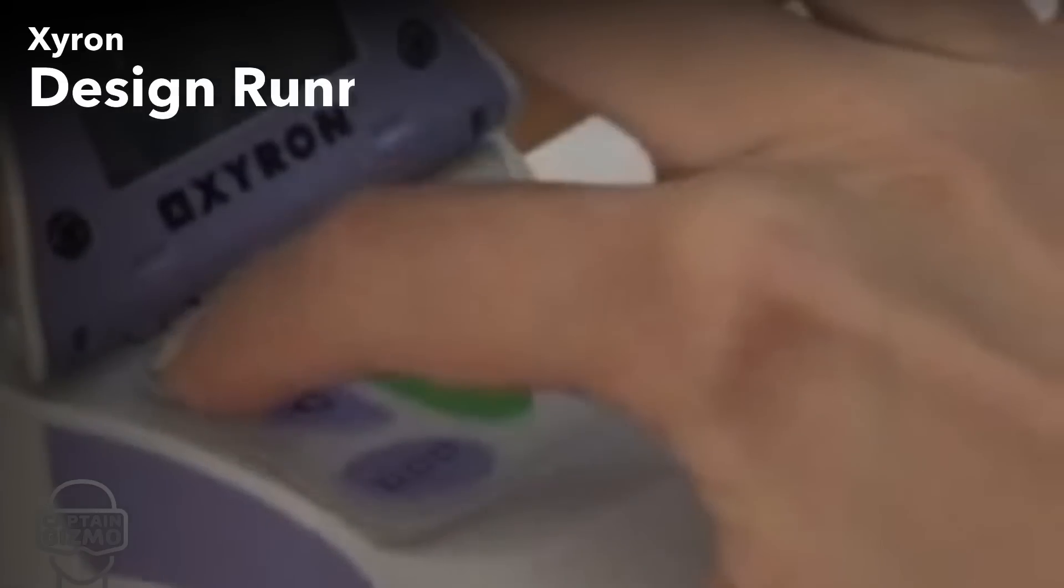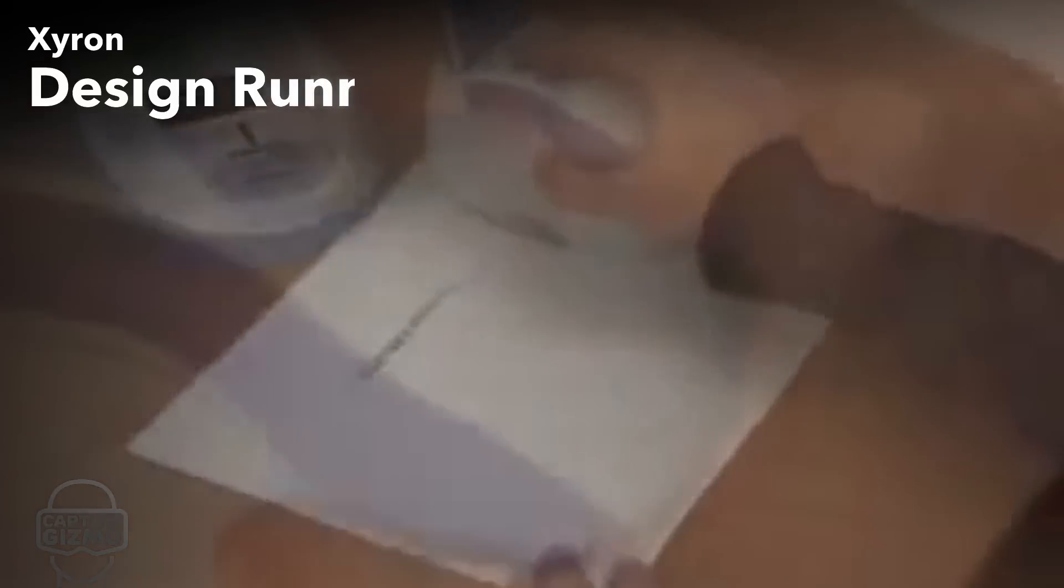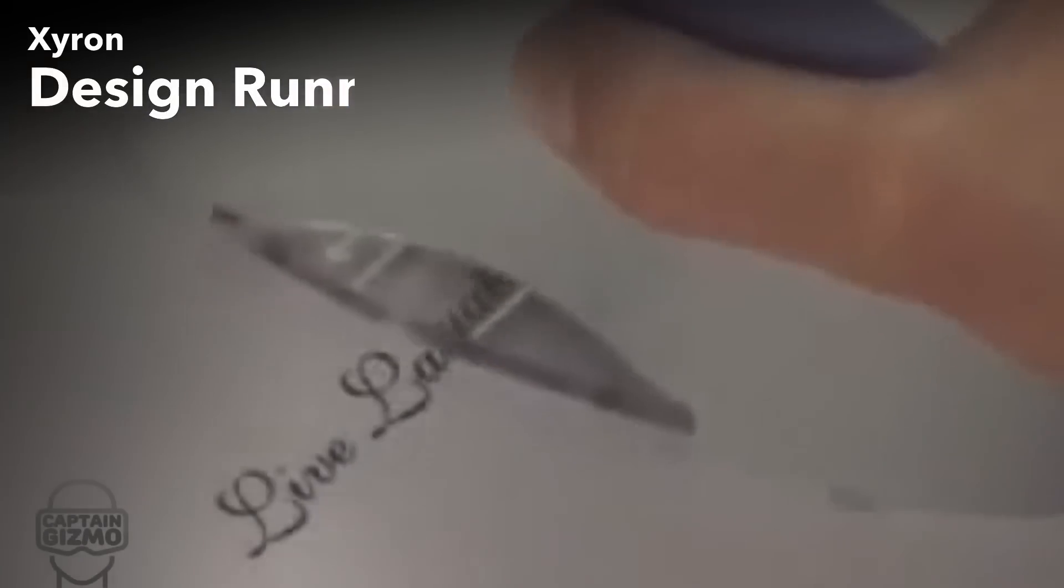A similar product from 2010 was the Xyron Design Runner. Like the PrintBrush, it was cordless and portable, but only handled a single color. It could print up to 5,000 inches on a single ink cartridge.